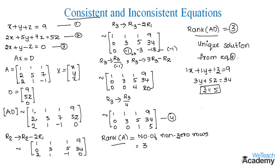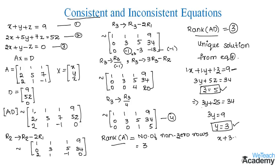Substituting z = 5 into the second equation: 3y + 5(5) = 34, so 3y + 25 = 34, giving 3y = 9 and y = 3. Substituting y = 3 and z = 5 into the first equation: x + 3 + 5 = 9, so x = 9 − 8 = 1. Therefore x = 1, y = 3, and z = 5.